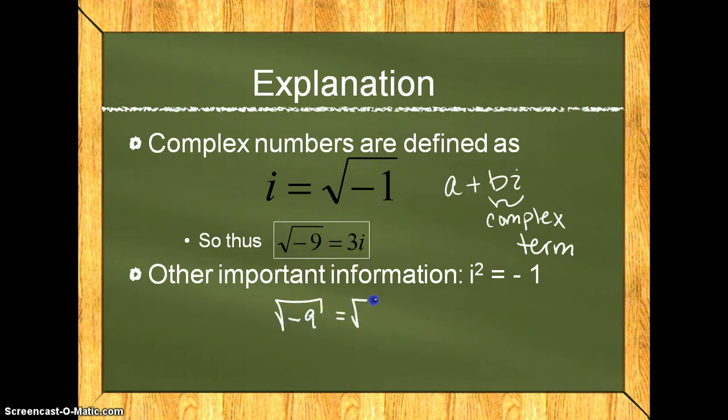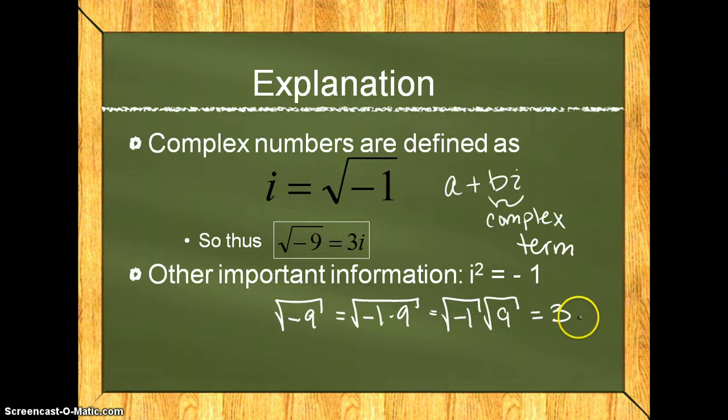This can be further broken down to the square root of negative 1 times the square root of 9. The square root of 9 is 3, and the square root of negative 1 is i. The easiest way to remember it is if you see a negative underneath a radical, remove it and put an i in front of the radical.